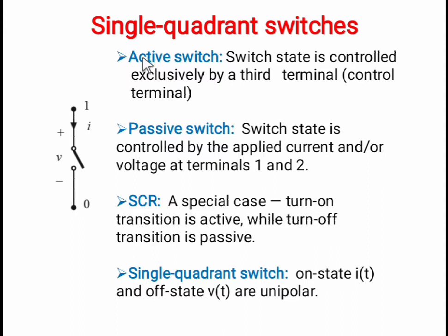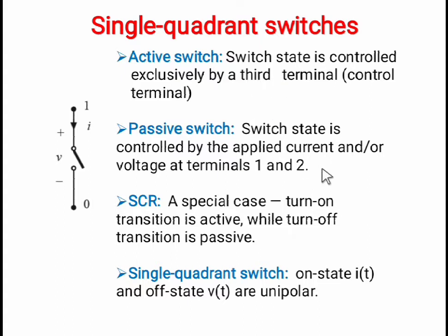For single quadrant switches, the first type is the active switch, where the switch state is controlled by a third terminal. The switch state — on or off — is controlled by the third terminal, like BJT and MOSFET. When we apply the gate signal to the MOSFET, it will turn on. If we remove the gate signal from the gate terminal, it will turn off. The on and off state of the MOSFET is controlled by the third terminal, gate. So it is known as the active switch. The passive switch is one in which the switch state is controlled by the applied current or voltage across its two terminals. So an active switch is a three terminal device while a passive switch is only a two terminal device.